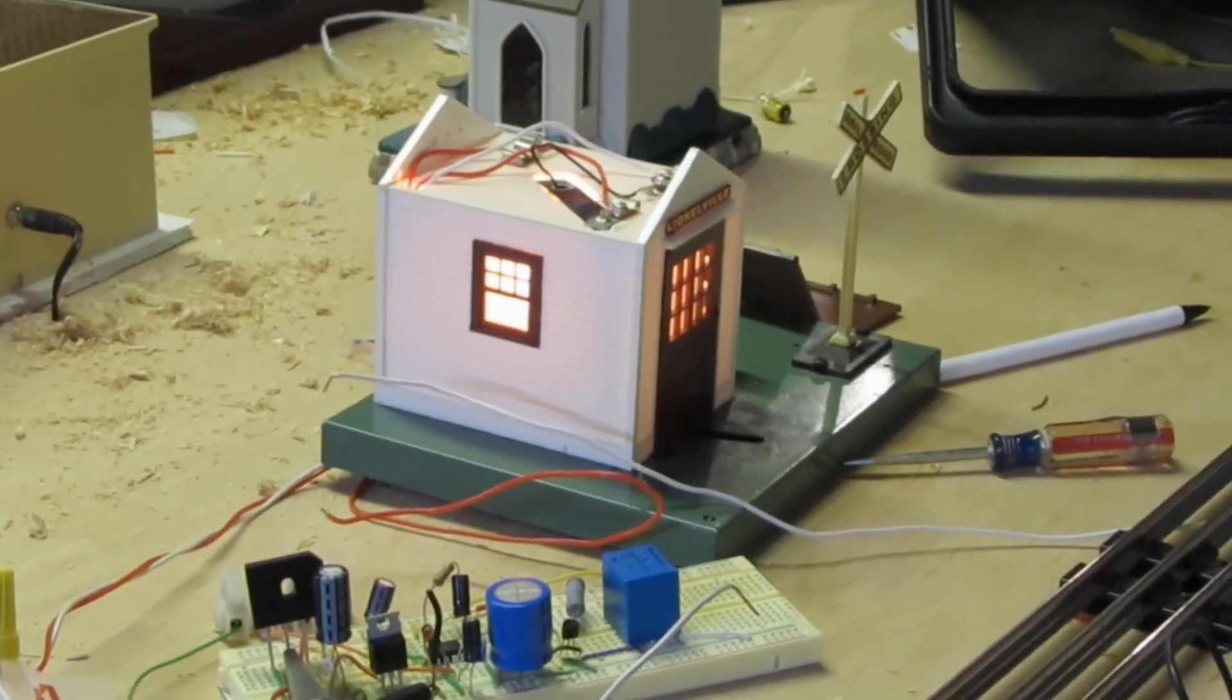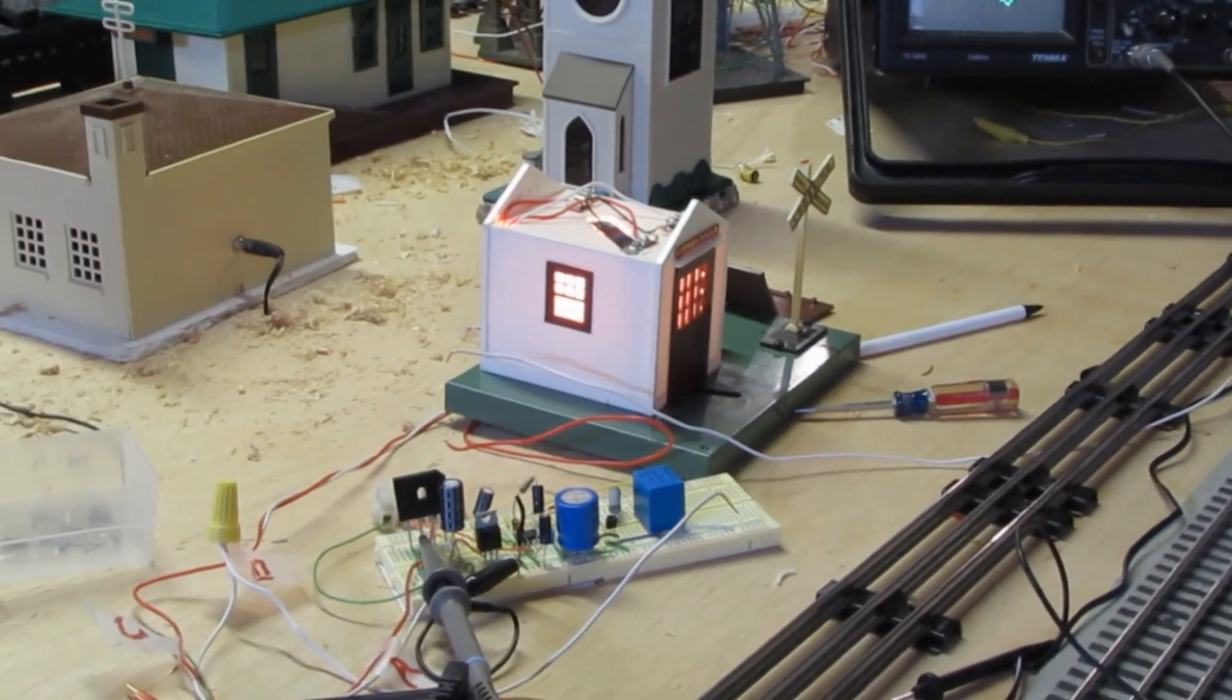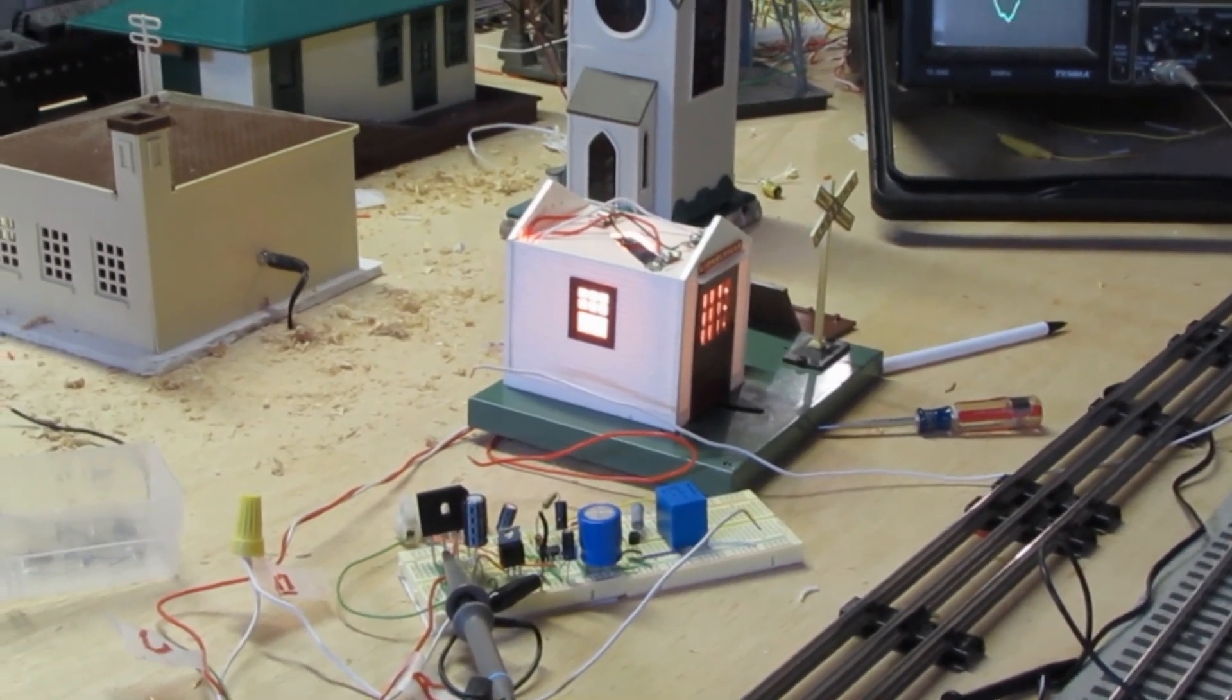When I first connected my circuit at the train table, it worked well, but when I tried to straighten out some wires, it stopped functioning.